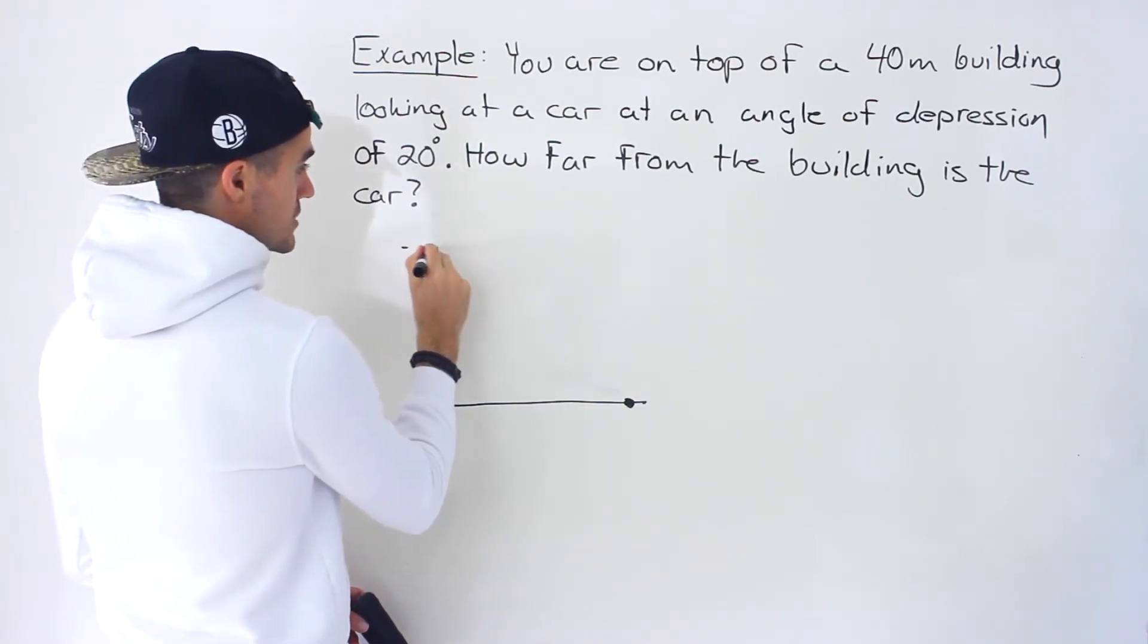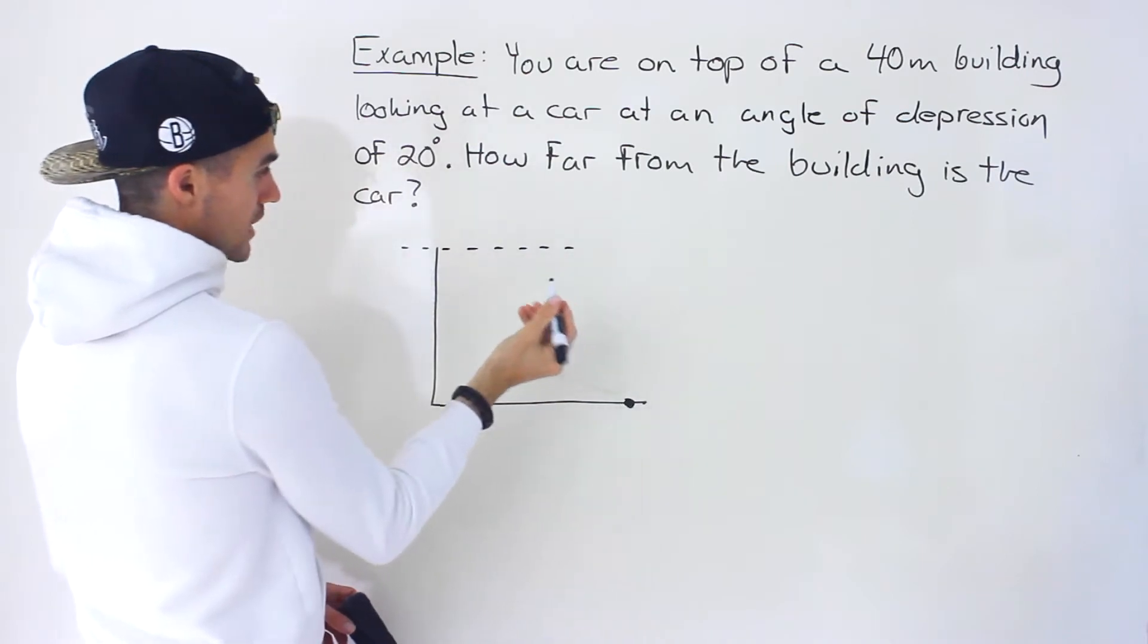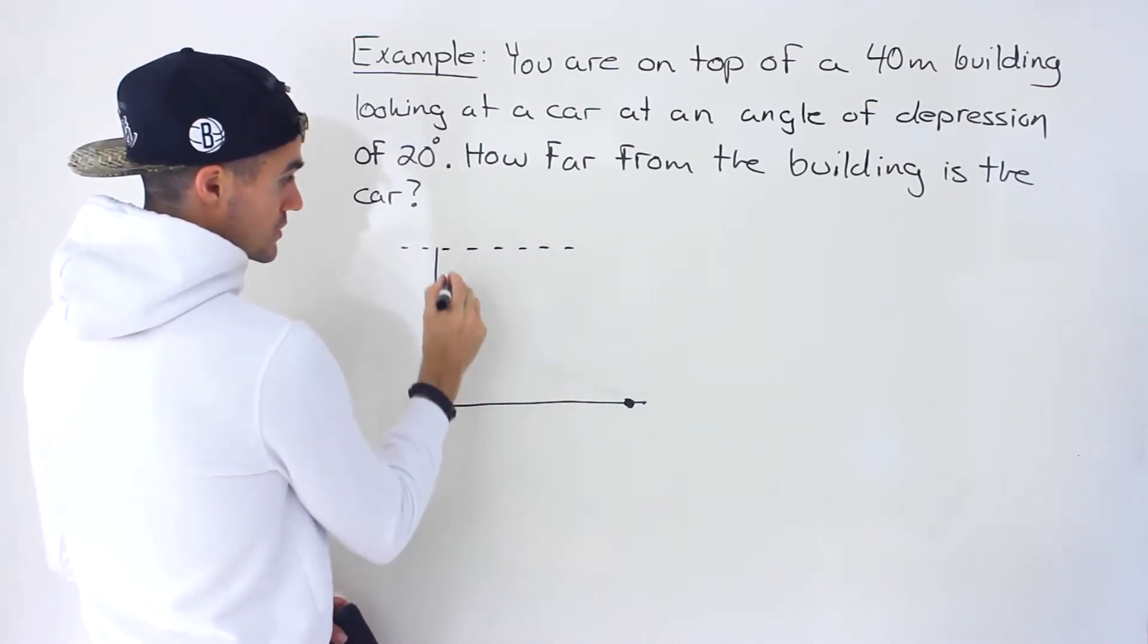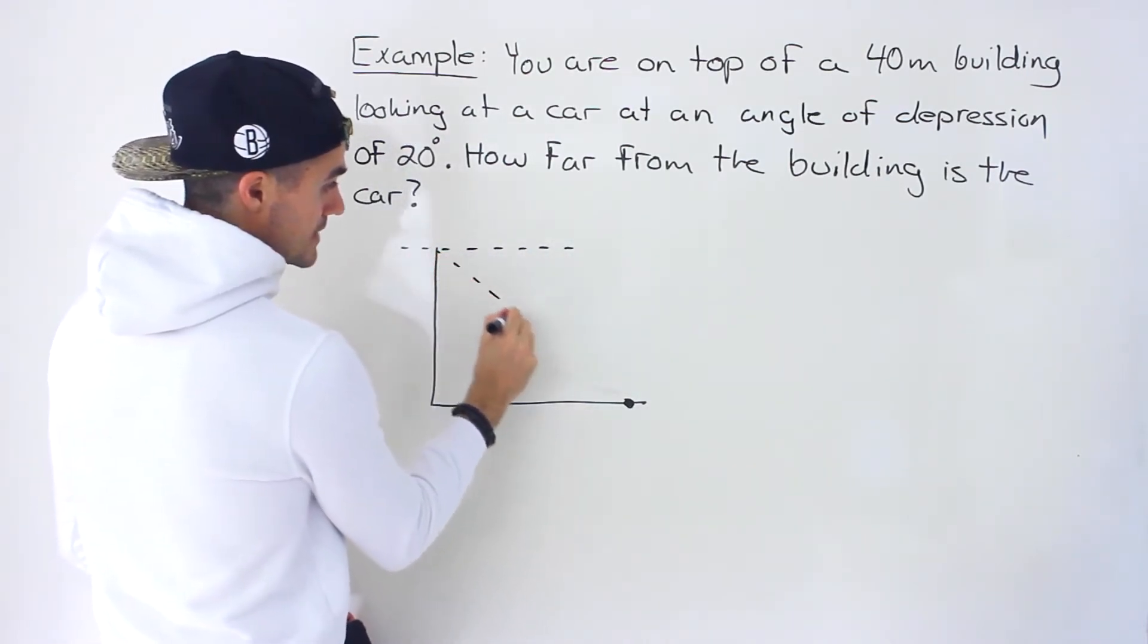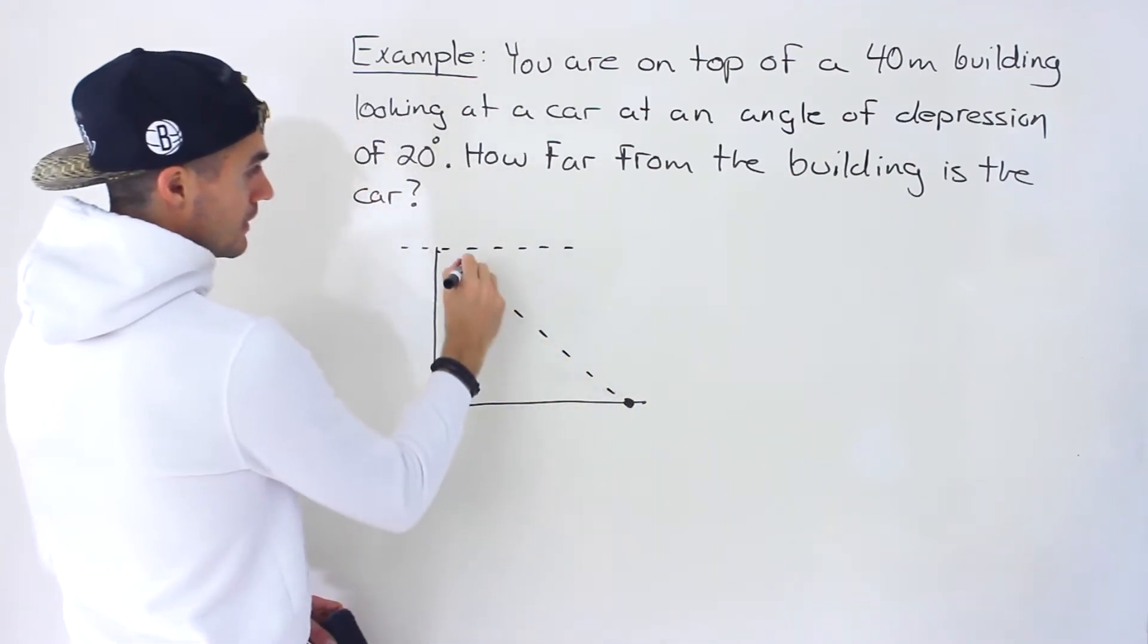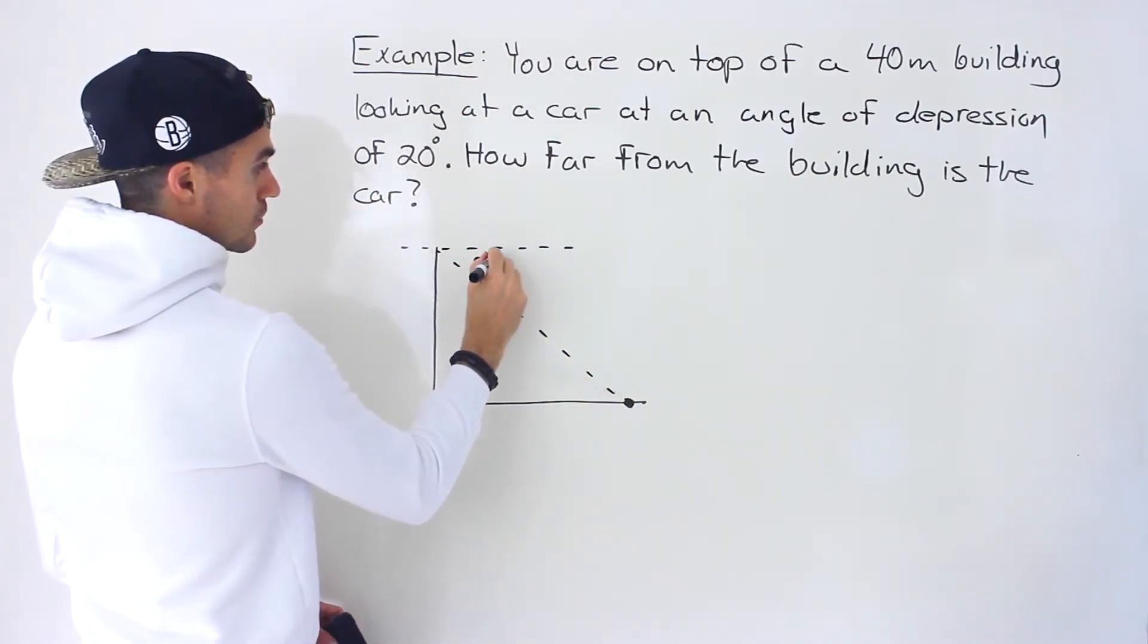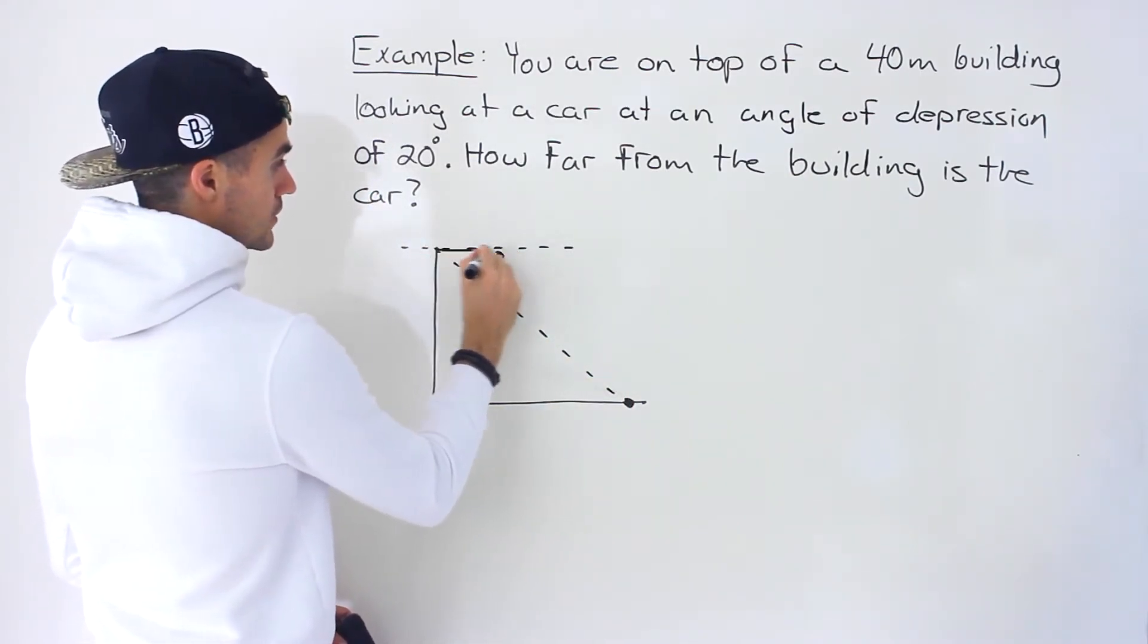So remember, an angle of depression, as I just mentioned, it originates from a horizontal line. So you're looking down like this at the car. That means that this angle right here is 20 degrees, right?